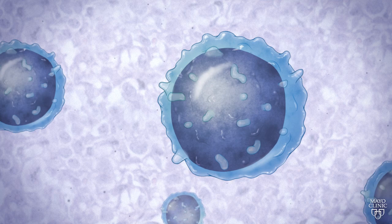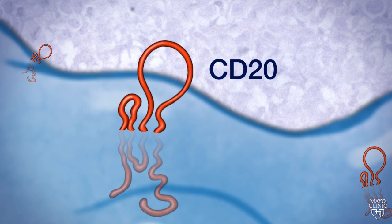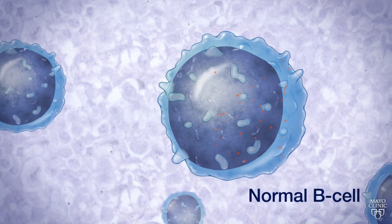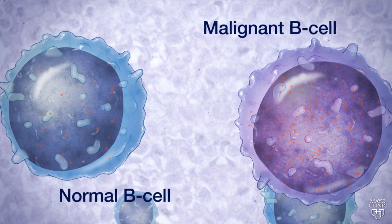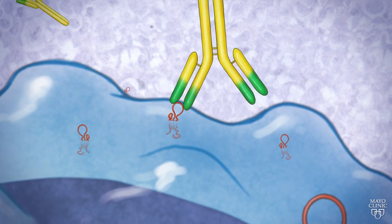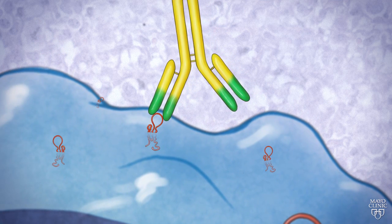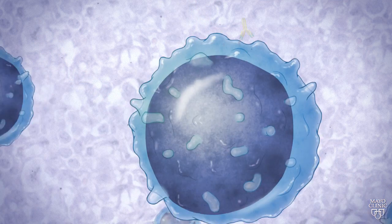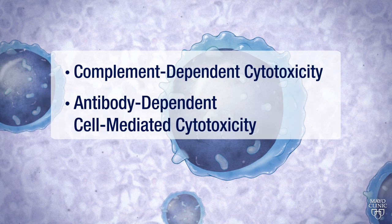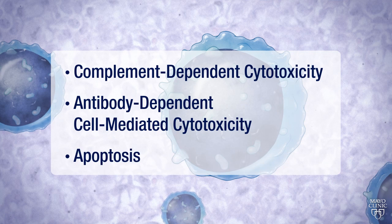Rituxan recognizes a specific glycoprotein, CD20, that is found on the cell membrane of mature normal B-cells in the body and often overexpressed in malignant B-cell lymphomas. When Rituxan binds to CD20, the antibody and antigen complex starts one of three cell lysis processes: complement-dependent cytotoxicity, antibody-dependent cell-mediated cytotoxicity, or apoptosis.